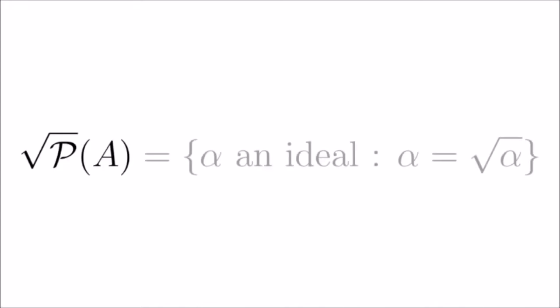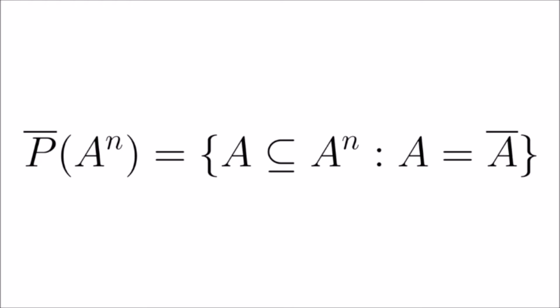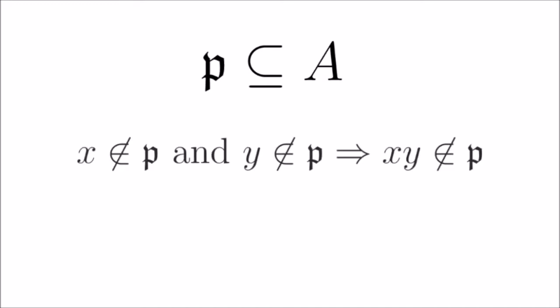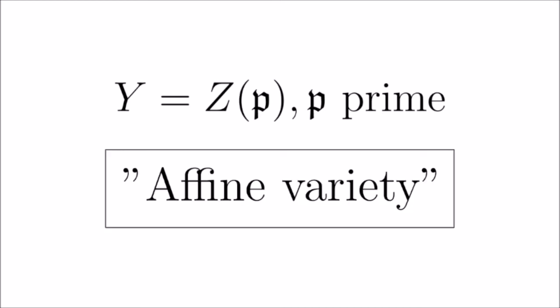Let's summarize. We denote by Rad(A) the set of all ideals equal to their radicals — called radical ideals — and by Cl(A^n) the set of all closed sets of A^n. The zero set and ideal functions take radical ideals to closed sets and vice versa, and considering only these sets, Z and I are inverses of each other. Thus we can study radical ideals by studying closed sets, and vice versa. From commutative algebra, prime ideals — those where products of elements outside the ideal stay outside — are of much importance to study. Since prime ideals are radical, if a subset of A^n equals the zero set of a prime ideal, we say it is an affine variety, the first major new object of study.